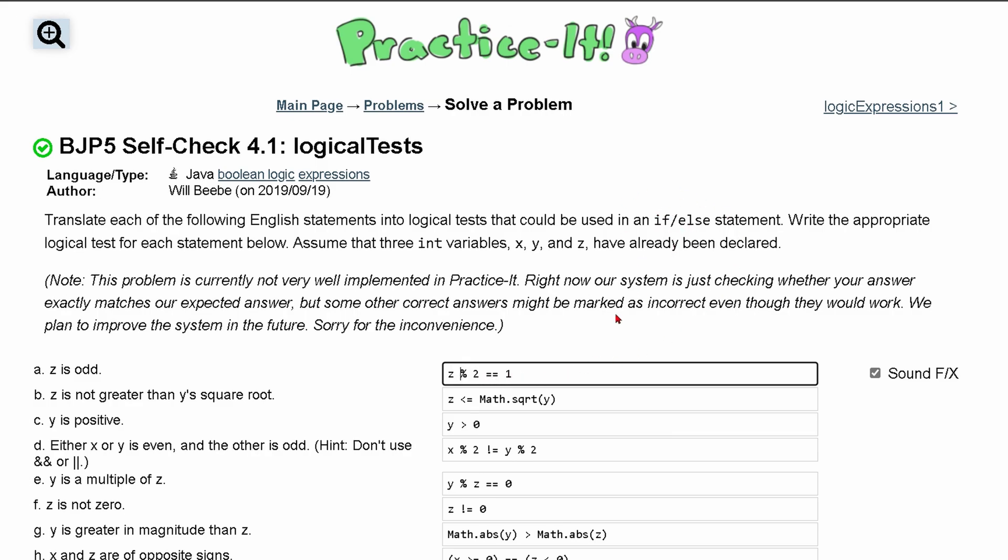Now, for our z being odd, we want our z modulus 2 to be equal to 1. Because if we pass in an odd number, like let's say 9, 9 modulus 2 is going to give us a remainder of 1. So that's how we would check this one.